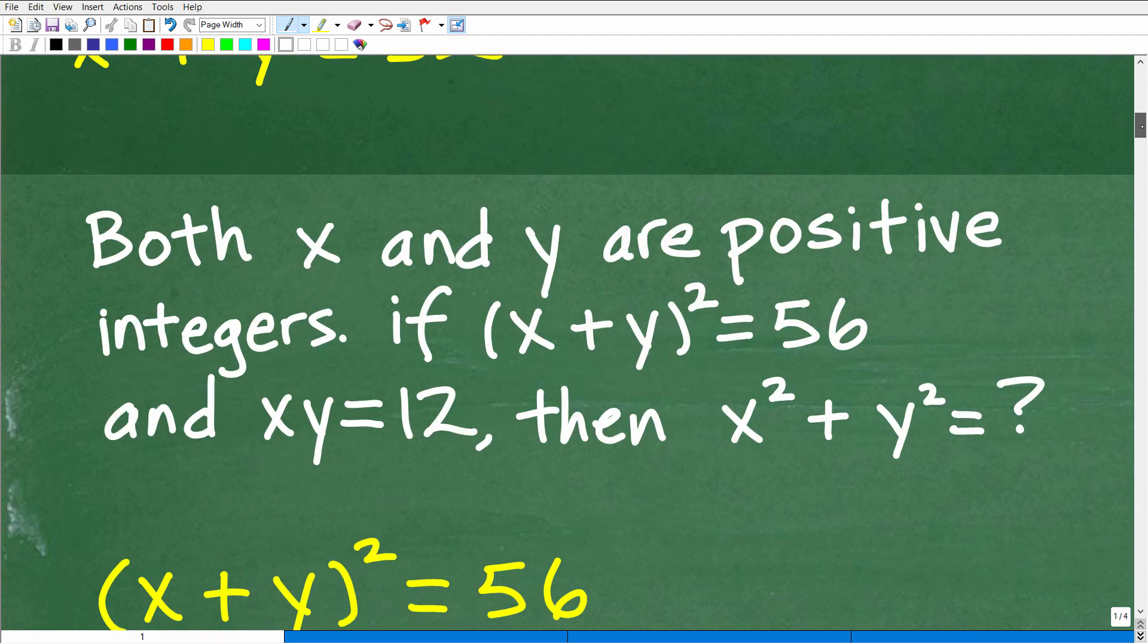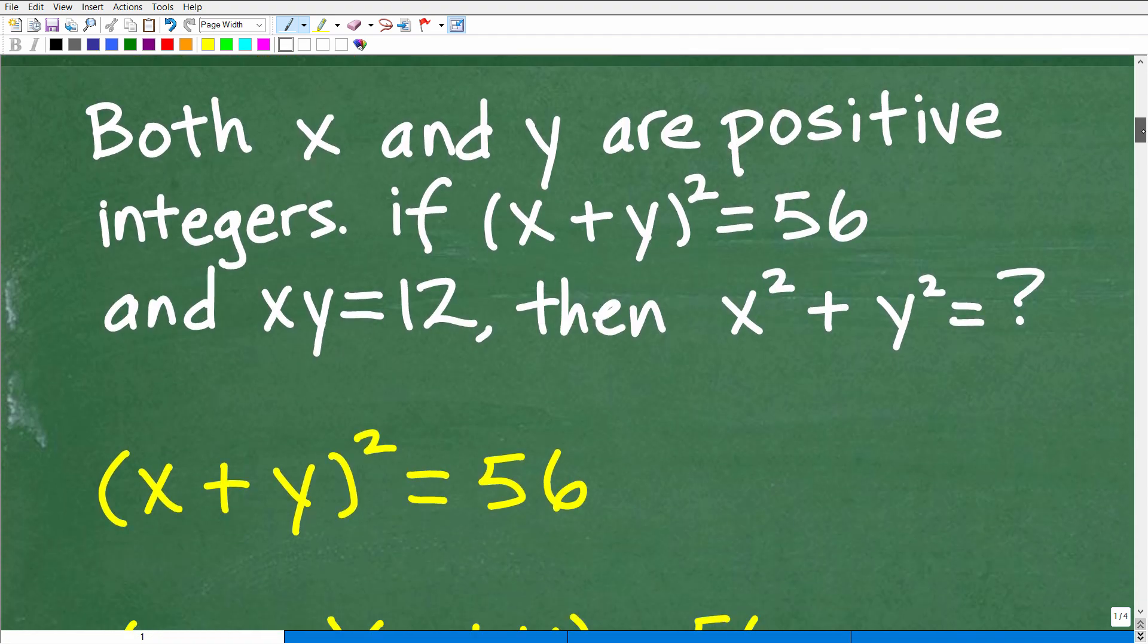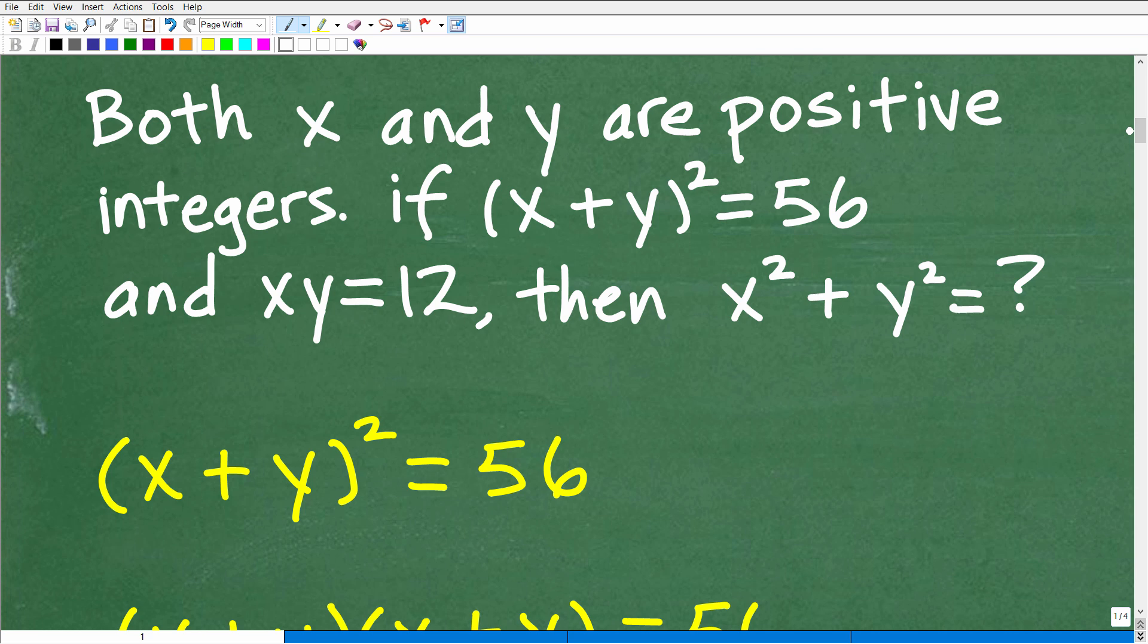Now, again, there's different ways you can approach this, but I'm going to show you the way that I'm going to think about it. Now, let's just take a look at the problem again. It says both x and y are positive integers. So it's a good idea to know what an integer is. And of course, we want to be talking about positive integers.